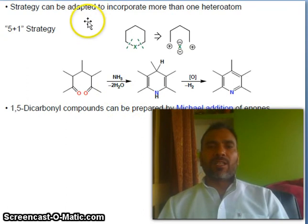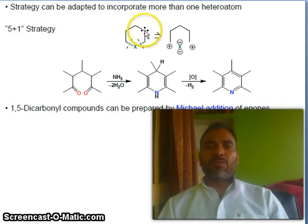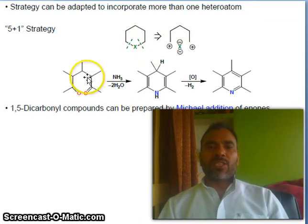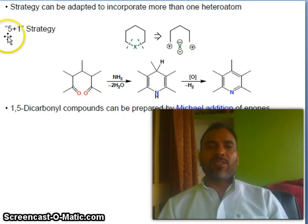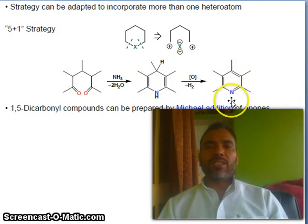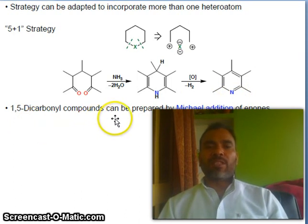Now five-plus-one strategy: if you want to make a six-membered ring, so this has one, two, three, four, five carbons and this heteroatom — the situation is like that after breaking of this bond. So one, two, three, four, five carbons — introduction of NH3 plus one — so five plus one: you will get this compound, and on oxidation you will get substituted pyridines. Now a 1,5-dicarbonyl compound can be prepared by Michael addition of an enone to this compound.